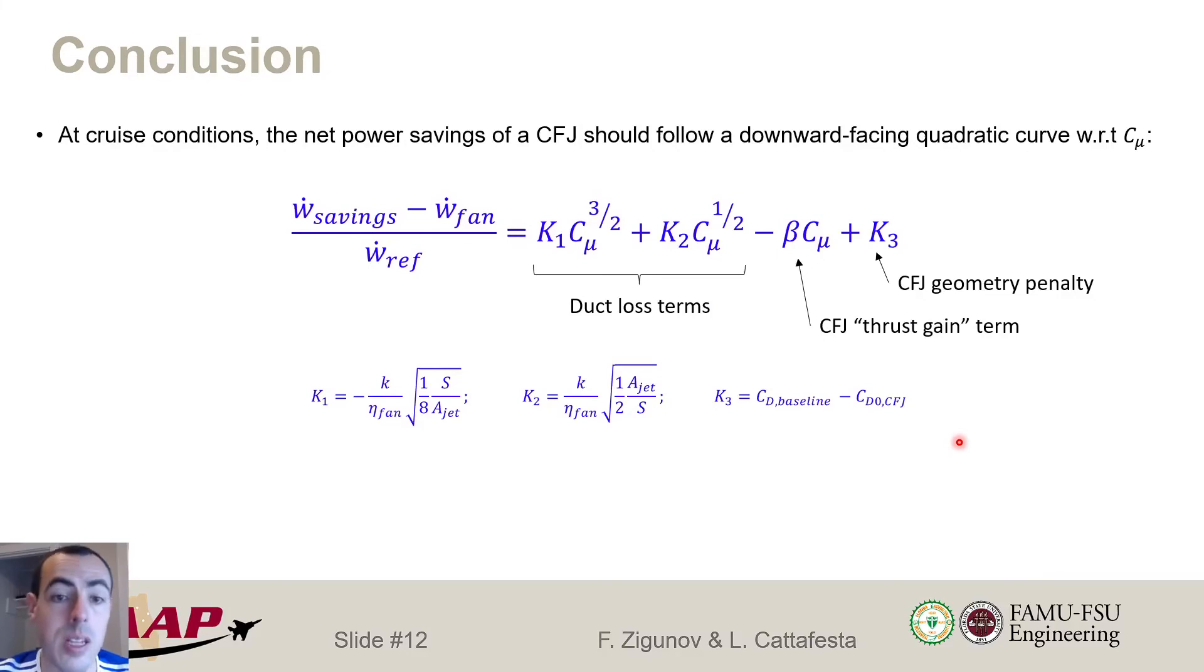Okay, the point that, or the takeaway message from this work is that we are able to define the net power savings of the co-flow jet system by a set of four constants, K1 to K3 and beta. And those constants can be designed and optimized to get the best power savings for our system. So the two first constants, K1 and K2, they're functions of the minor loss of the duct at the slot area ratio. Whereas K3 is this geometry penalty for changing the external geometry. Whereas beta is our thrust leverage term that we get from changing the geometry of the airfoil. And we can tune these constants to get best efficiency.